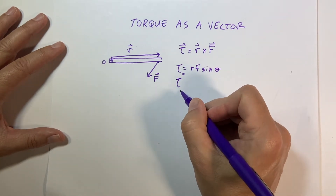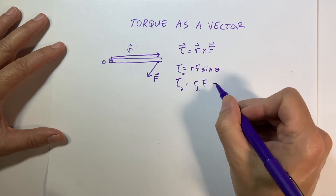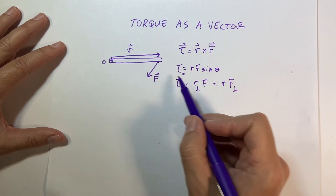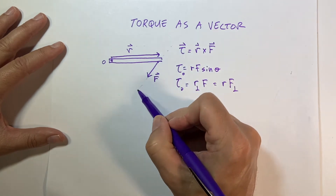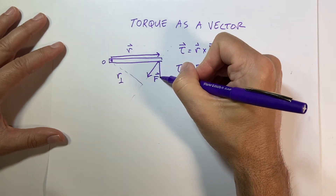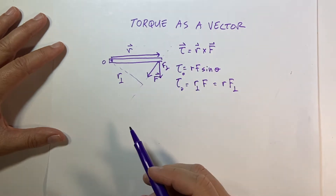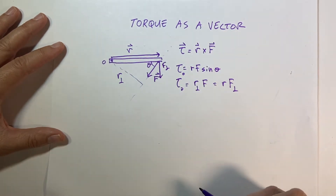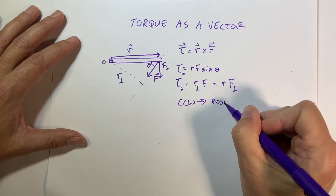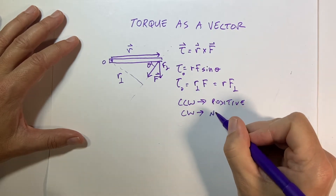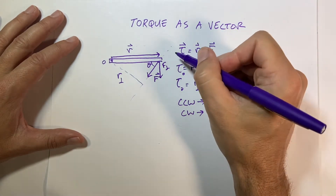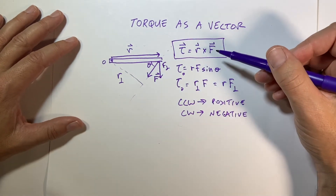We also wrote it as: torque about O equals r-perpendicular times f, or r times f-perpendicular — these are all the same thing. r-perpendicular is drawn like this, and f-perpendicular is that component of force. That's theta. Those are my definitions of torque — counterclockwise positive, clockwise negative. But in fact, the cross product definition is better.